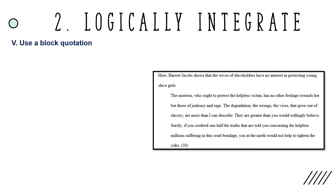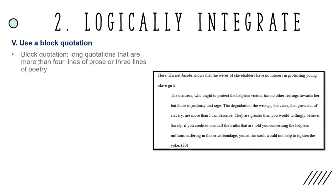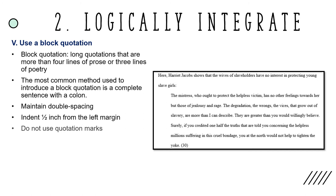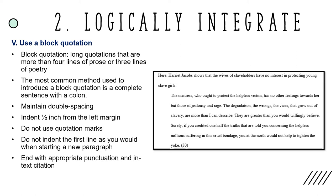Finally, you can use a block quotation to integrate your source. Long quotations that are more than four lines of prose or three lines of poetry should be set off as block quotations. Introduce the quotation using one of the previous methods — the most common method is a complete sentence with a colon. Maintain double spacing and indent your block quotation one half inch from the left margin. This indentation replaces the need to use quotation marks. Do not indent the first line of the quotation as you would when starting a new paragraph. End your quotation with the appropriate punctuation followed by your in-text citation. In block quotations, no punctuation is necessary after the in-text citation.